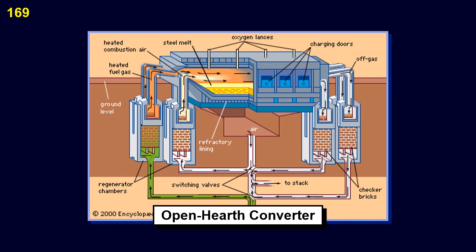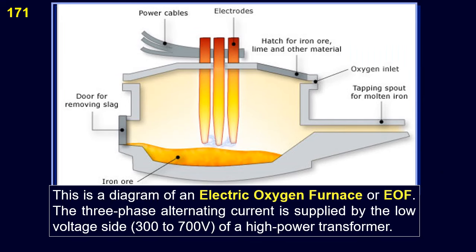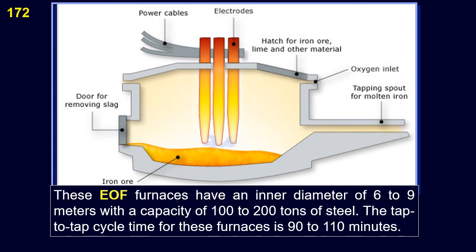This is a diagram of a basic oxygen furnace, or BOF, for steelmaking. Before casting, the steel can be refined with respect to levels of phosphorus, sulfur, nitrogen, and hydrogen. At the same time, its content of carbon, manganese, and micro-alloying elements such as niobium, vanadium, and titanium can be adjusted. This is a diagram of an electric oxygen furnace, or EOF. The three-phase alternating current is supplied by the low-voltage side — 300 to 700 volts — of a transformer. These EOF furnaces have an inner diameter of 6 to 9 meters with a capacity of 100 to 200 tons of steel, and a tap-to-tap cycle time of 90 to 110 minutes.